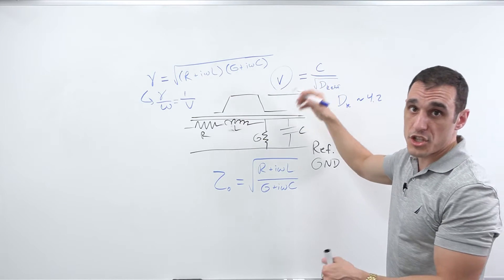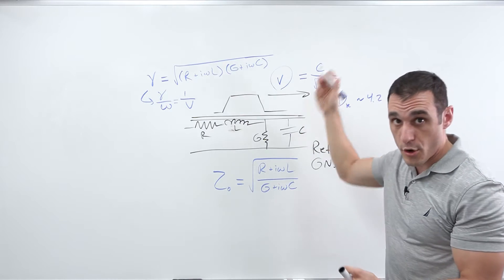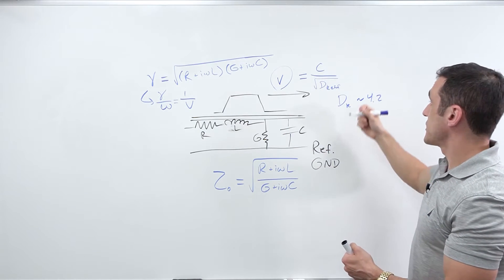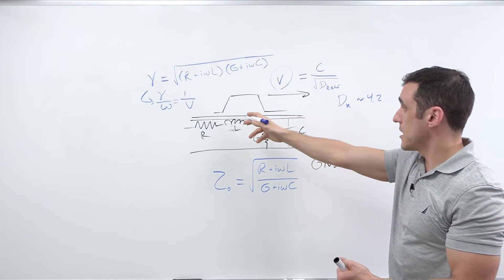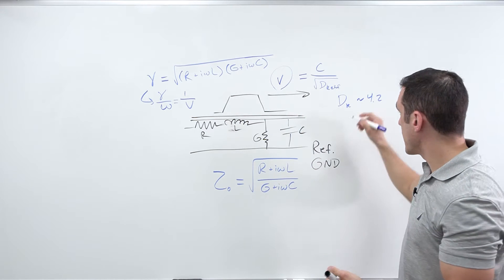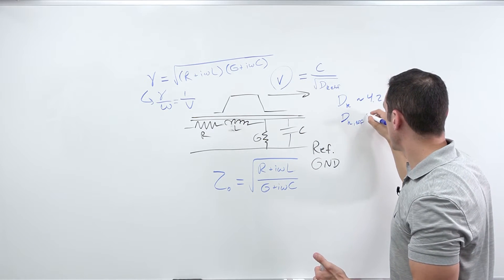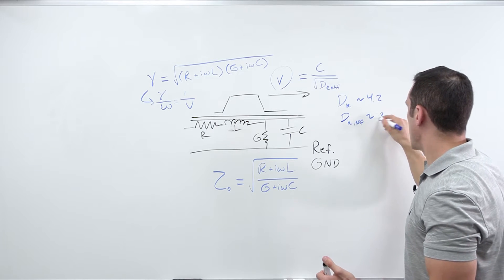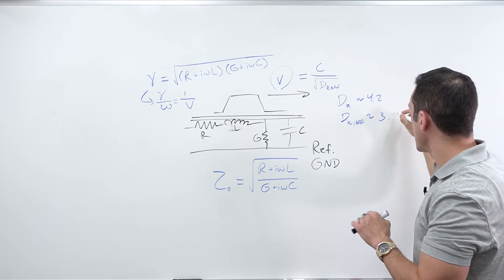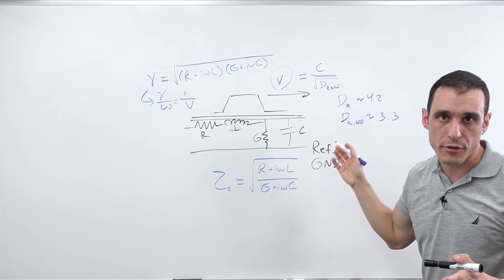So it depends on the geometry of the conductor. It depends on where it's located in the substrate. So if it's an external trace, like it's on the surface layer, it's on the bottom layer, you actually have DK effective is approximately. And again, it's going to depend on geometry and everything, but it might be something like 3.3.